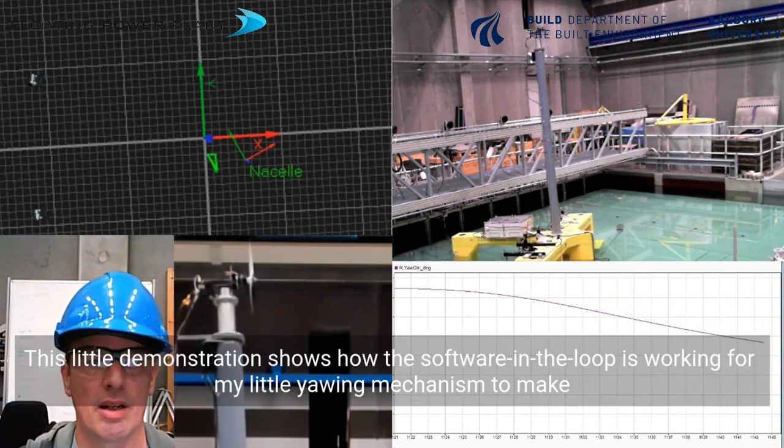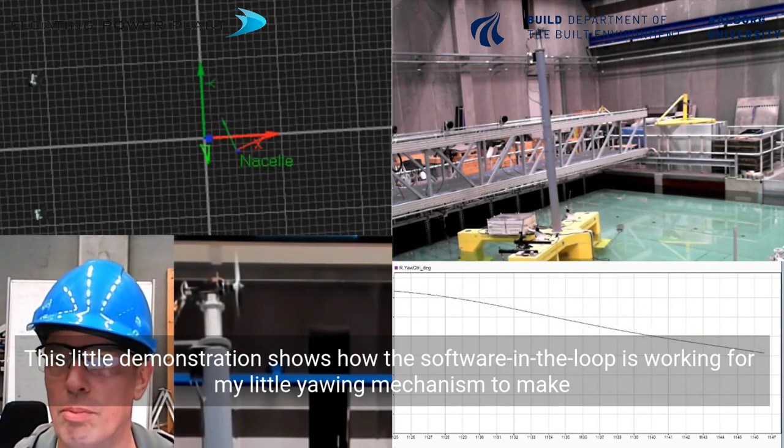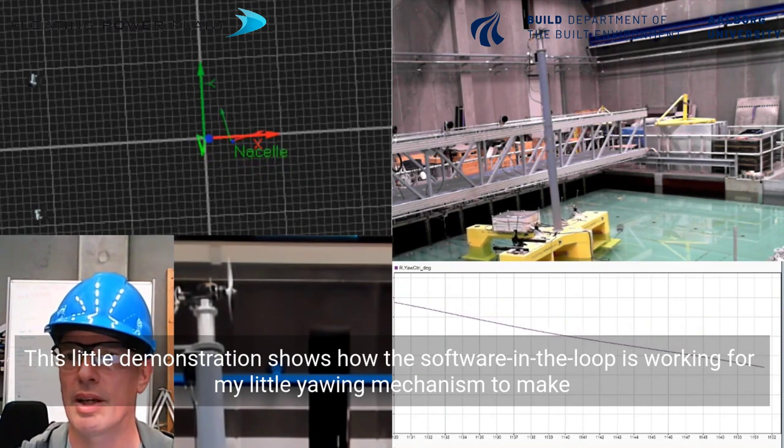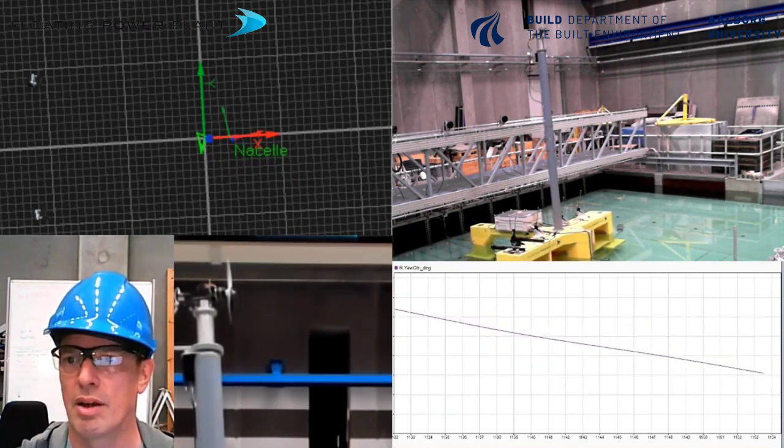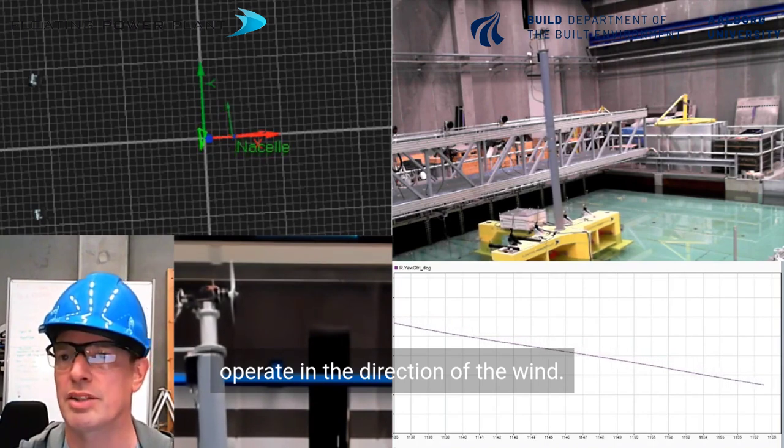This little demonstration shows how the software in the loop is working for my little yawing mechanism to make the fan operate in the direction of the wind.